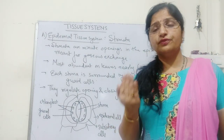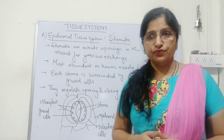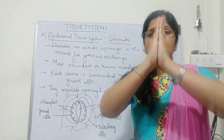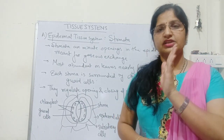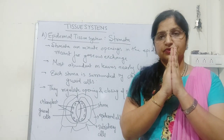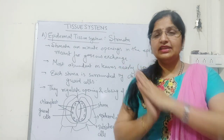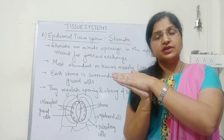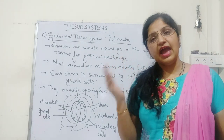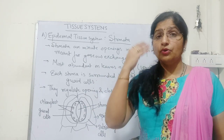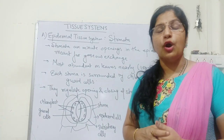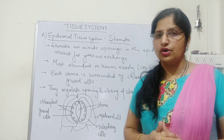The distribution of stomata also varies between monocot and dicot leaves. In monocot leaves, called isobilateral leaves — because the leaf stands in an upright position — stomata are uniformly distributed on both surfaces. In dicot leaves, called dorsiventral leaves, the distribution is variable: the dorsal surface has fewer stomata while the ventral surface (lower epidermis) has more stomata, preventing maximum water loss.